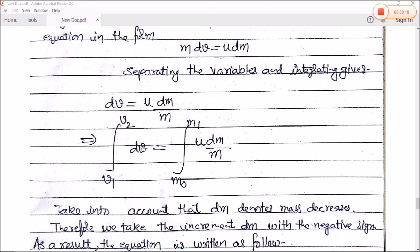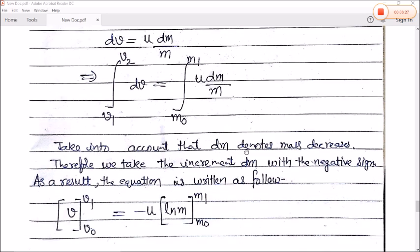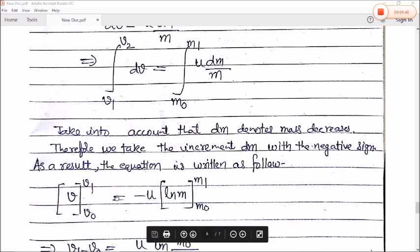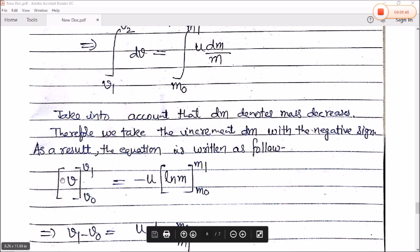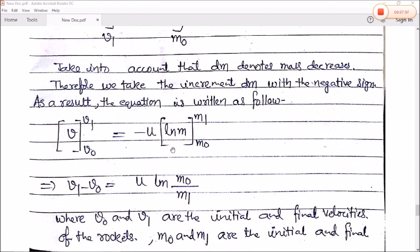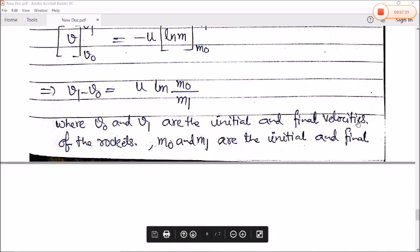Now we integrate v from initial velocity V0 to V1 and mass from M0 to M1. Taking into account that dm denotes mass decrease, we take the increment dm with negative sign. Integrating gives us V1 minus V0 equals u*ln(M0/M1), where V0 and V1 are the initial and final velocity of the rocket, and M0 and M1 are the initial and final masses of the rocket respectively.